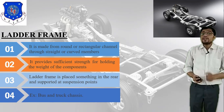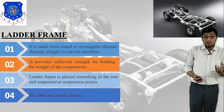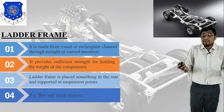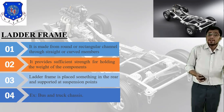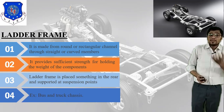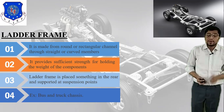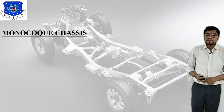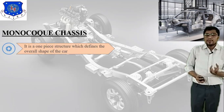The ladder frame is placed at the rear and supported at suspension points. In buses and trucks, this type of ladder frame is used because it is made from rectangular channel, is heavy duty, and provides sufficient strength for holding the weight of the components.